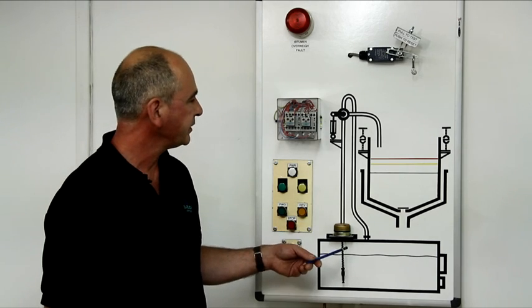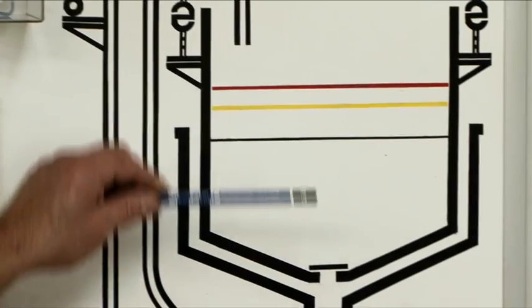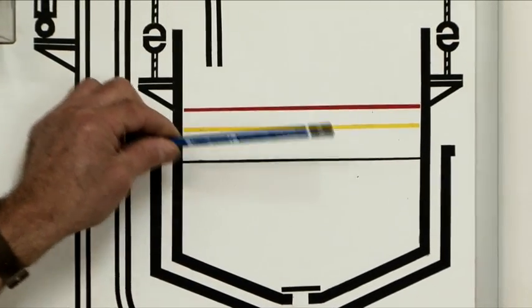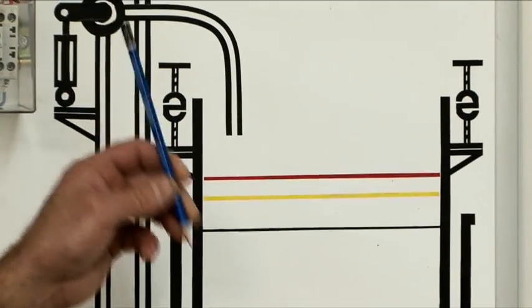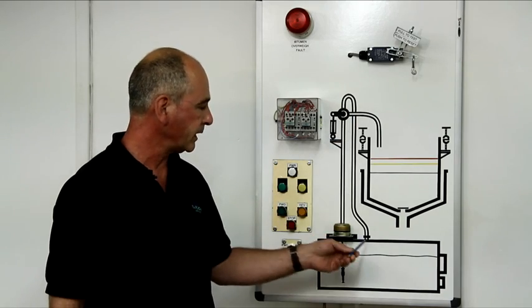The bitumen is pumped up from the storage tank through the pneumatic valve into the whey kettle. It is weighed up to the required amount and then the control system stops the pneumatic valve and the flow of bitumen returns back down into the tank.